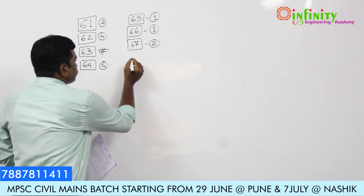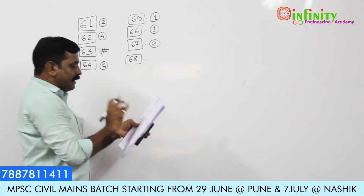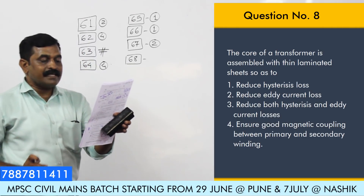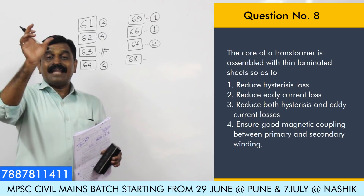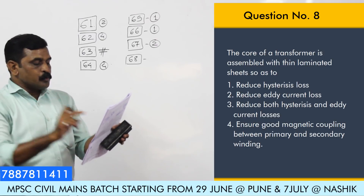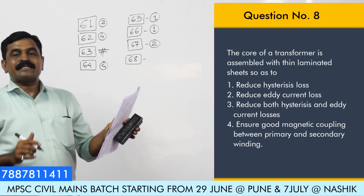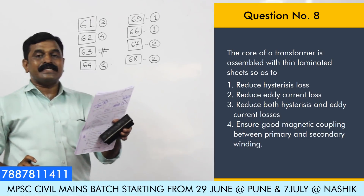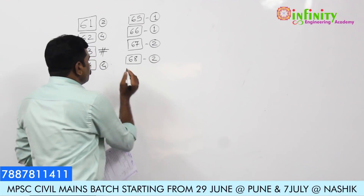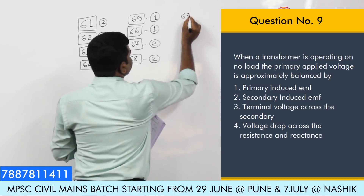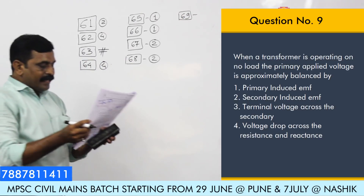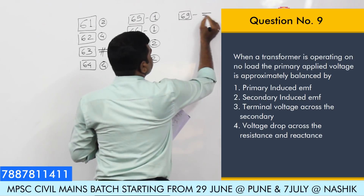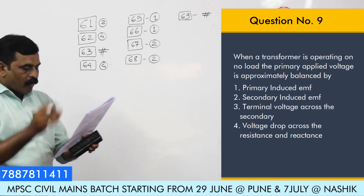Question number 68 relates to losses in a transformer. The core of a transformer is assembled with laminated sheets. Laminated sheets are used to reduce the eddy current loss in a transformer. Therefore option 2 is correct: reduce the eddy current loss. Question number 69 is somewhat tricky, so you should refer to the MPSC key for the exact answer.